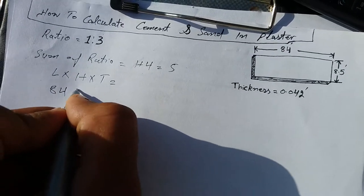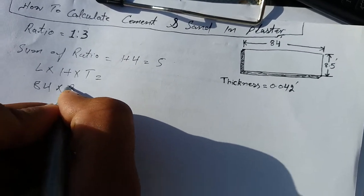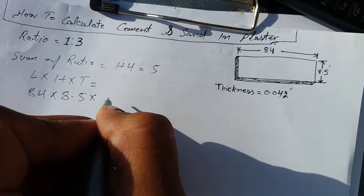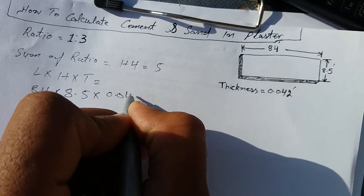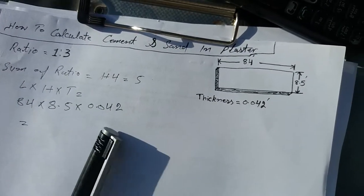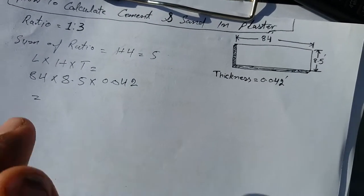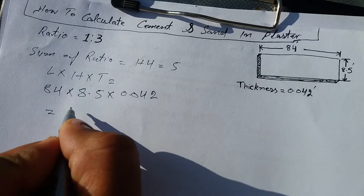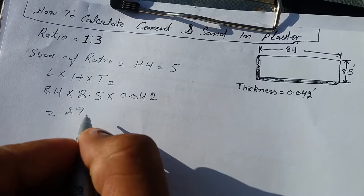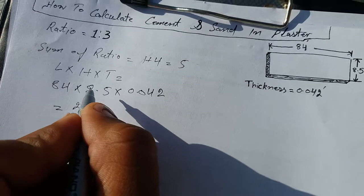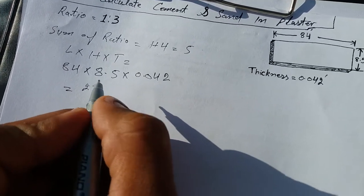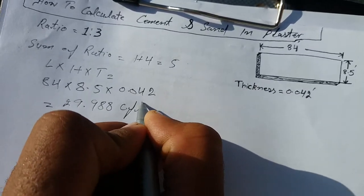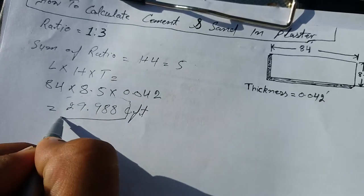I pass my values for volume. When I multiply the whole value, it becomes 29.988 cubic feet because this was in cubic feet.